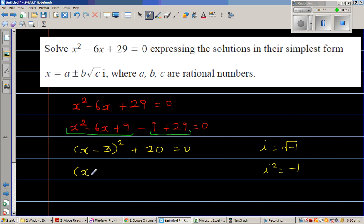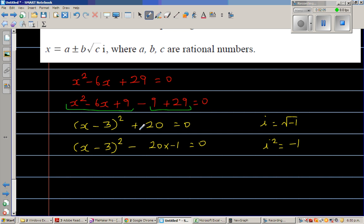I want to make this positive. I want to write plus 20, so I'm putting a minus here. Can I write like this? This is minus minus 20 equal to 0. So this is (x - 3)² minus, this negative 20 can be written as 20 times minus 1 equal to 0.